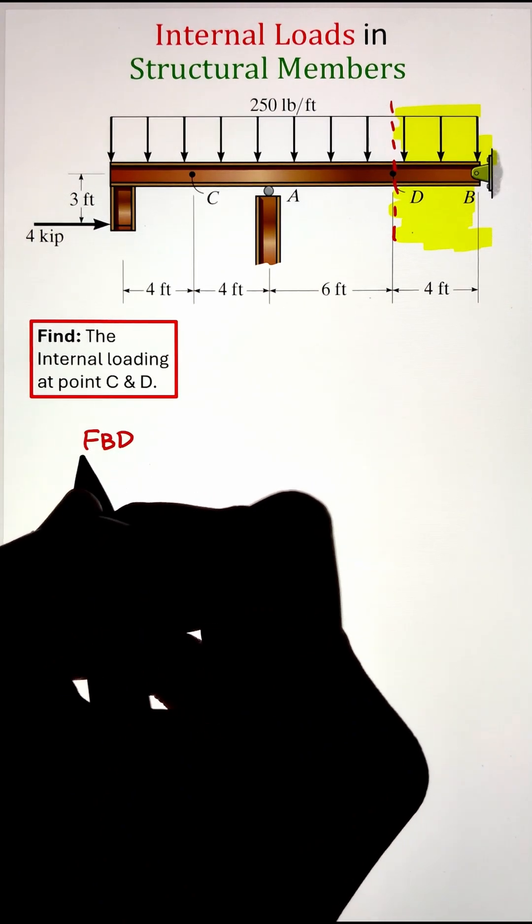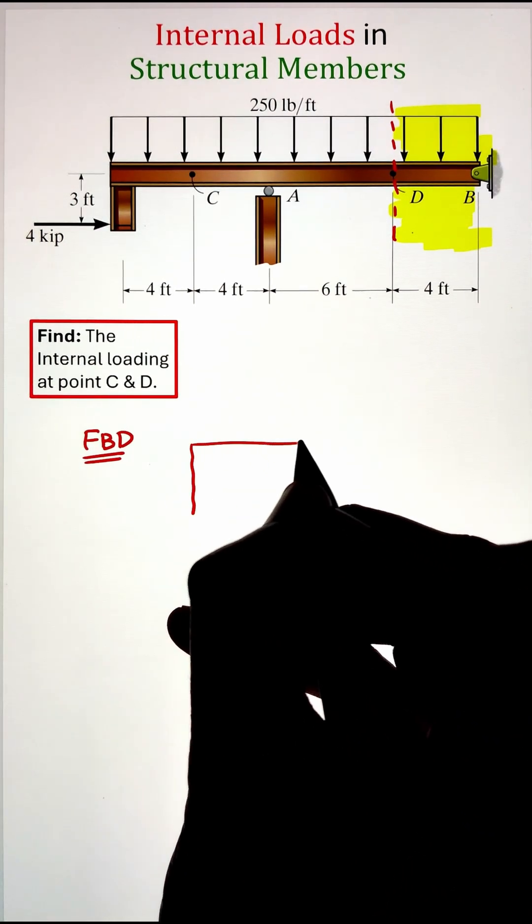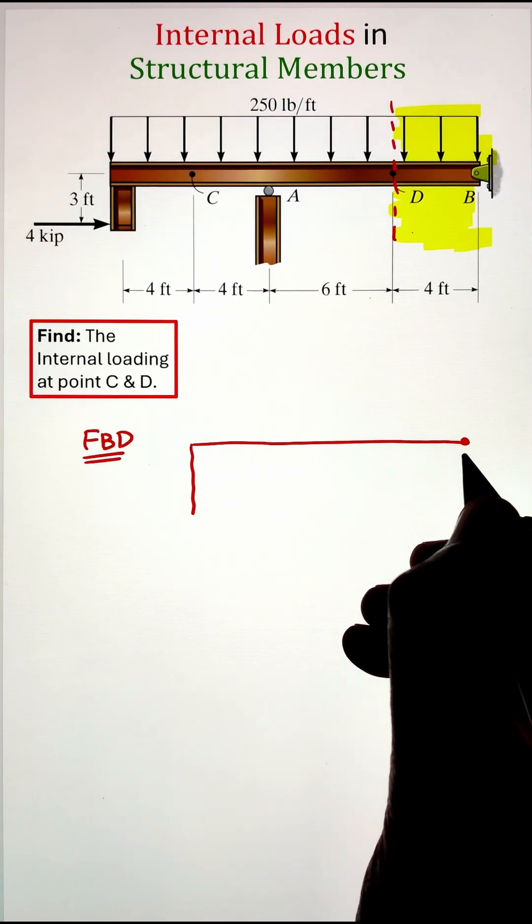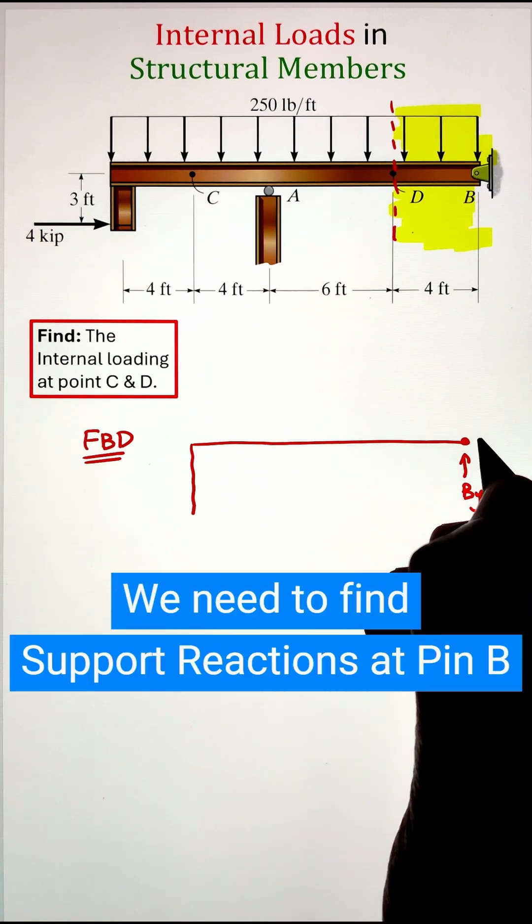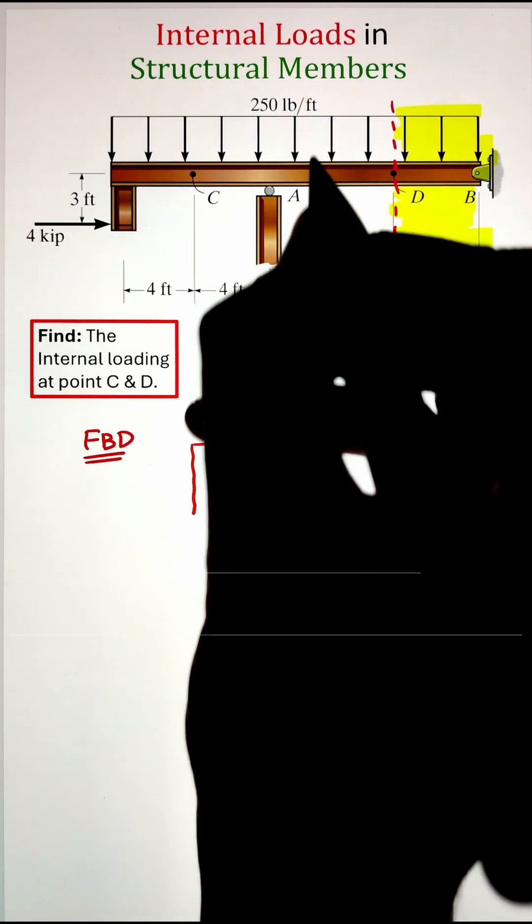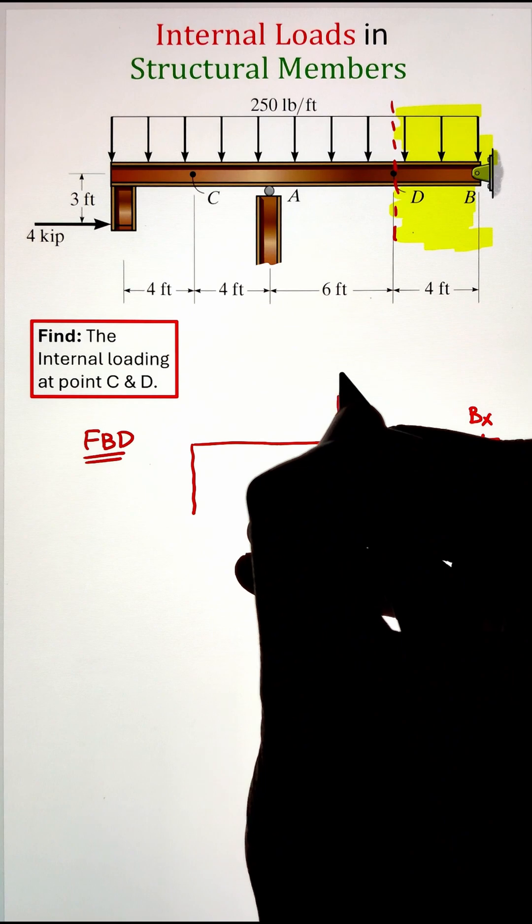Here we are going with section DP. Since we have a support reaction at point D, we need to identify those forces. So let's go ahead and draw the free body diagram of the whole structure and first identify the support reactions PX and PY.